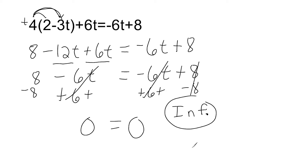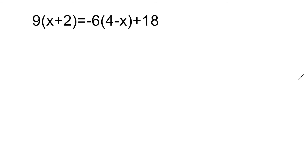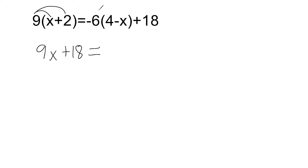Let's go ahead and do another example. With this equation, we have to use the distributive property on the left and on the right. I'm going to distribute this 9 to both terms inside the parentheses: 9 times x is 9x, and 9 times 2 is 18. On the right side, we have to be careful because we're dealing with many negatives. We start with negative 6 times positive 4, which produces negative 24. Then negative 6 times negative x produces positive 6x, because a negative multiplied by another negative always makes a positive.